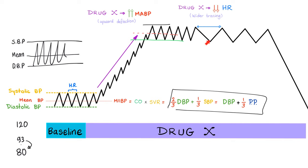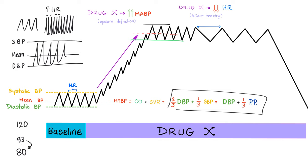How about the heart rate? If the tracing becomes narrower — the distance between each two peaks is declining — this is tachycardia. But if the tracing becomes wider, this is bradycardia or decreased heart rate.